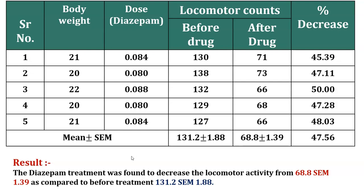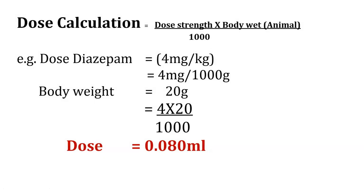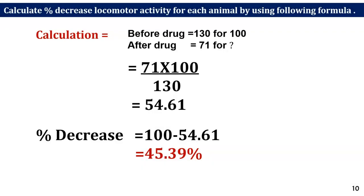Let us discuss how to calculate the dose. As per the dose given, diazepam has 4 mg/kg dose strength. We convert that to 4 mg per 1000 grams. Taking the example of one animal weighing 20 grams, we cross-multiply the values. According to that, we get the dose for animal number one as 0.080 mL. You can calculate the dose according to the body weight of each animal and then inject that dose.